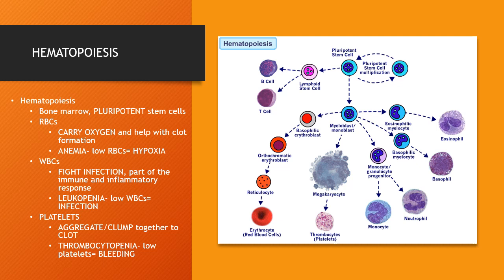Hematopoiesis is the process of forming, developing, and differentiating the different cells within the bloodstream. This occurs in the red marrow of bones. It's named red marrow because you can see the red blood cells giving it the color, but all blood cells are formed there. In adults, red marrow is present in flat and irregular bones. In children, red marrow is present in all bones, specifically the long bones.